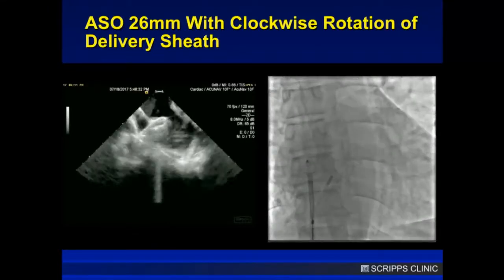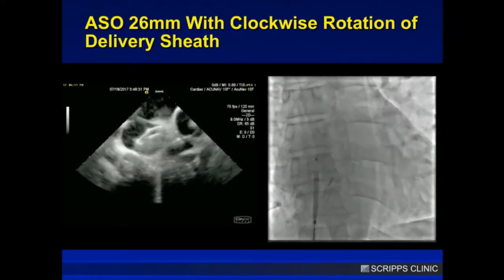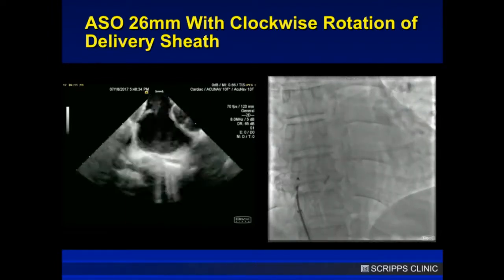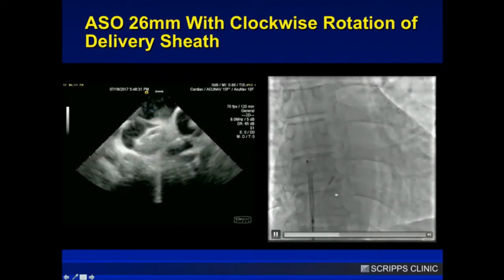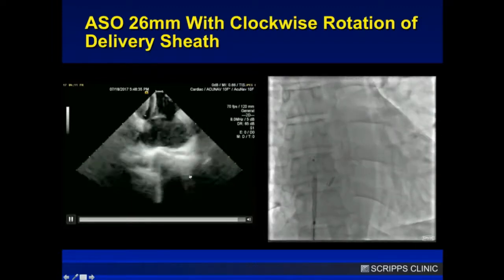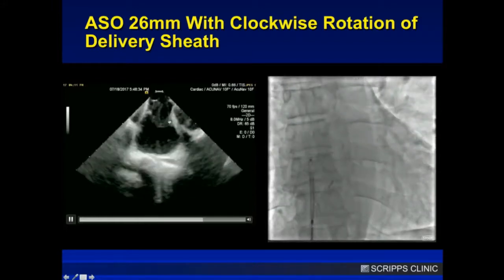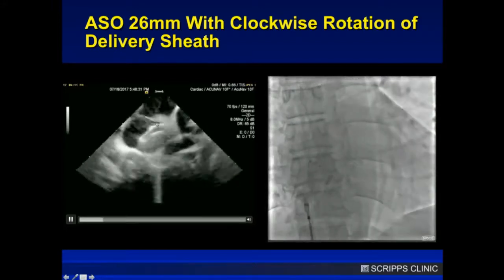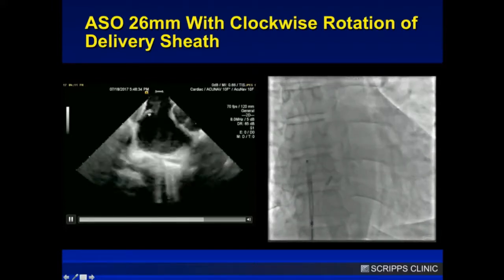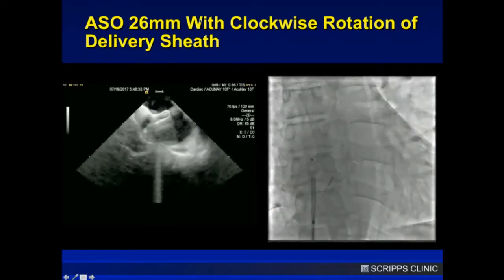I'm doing this by intracardiac Echo. I went off the bat with clockwise rotation — you can see I'm straight up and down on the fluoro, just how I want to be. But it just falls right through. Number one, I'm still not quite orthogonal to the septum. Number two, it's very floppy — you can see I'm pushing the septum all the way out. So clockwise rotation doesn't work here.